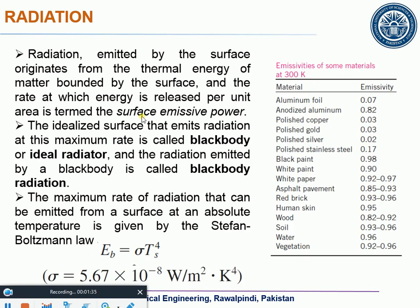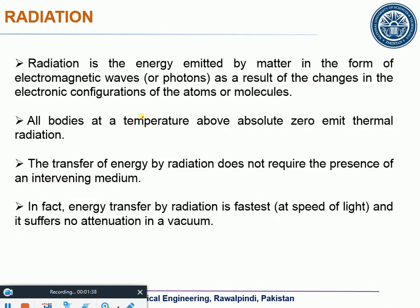Radiation is the energy emitted by matter in the form of electromagnetic waves or photons — I hope you remember the wave-particle theory. This is something related to that. The physics or chemistry behind it involves electromagnetic waves or photons emitted as a result of changes in the electronic configuration of atoms. If the electron jumps from one orbit to another, it would emit or absorb energy.